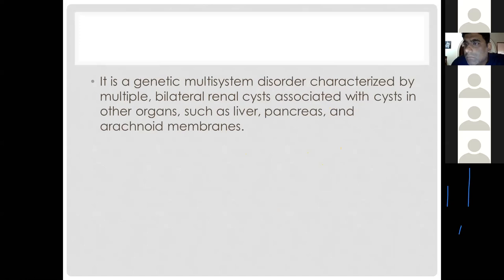Autosomal dominant polycystic kidney disease is the most common and requires the most study. It is a genetic multi-system disorder characterized by multiple bilateral renal cysts associated with cysts in other organs such as the liver, pancreas, and arachnoid membranes. It is important to remember that ADPKD involves cysts not only in the kidneys but in multiple other organs as well.